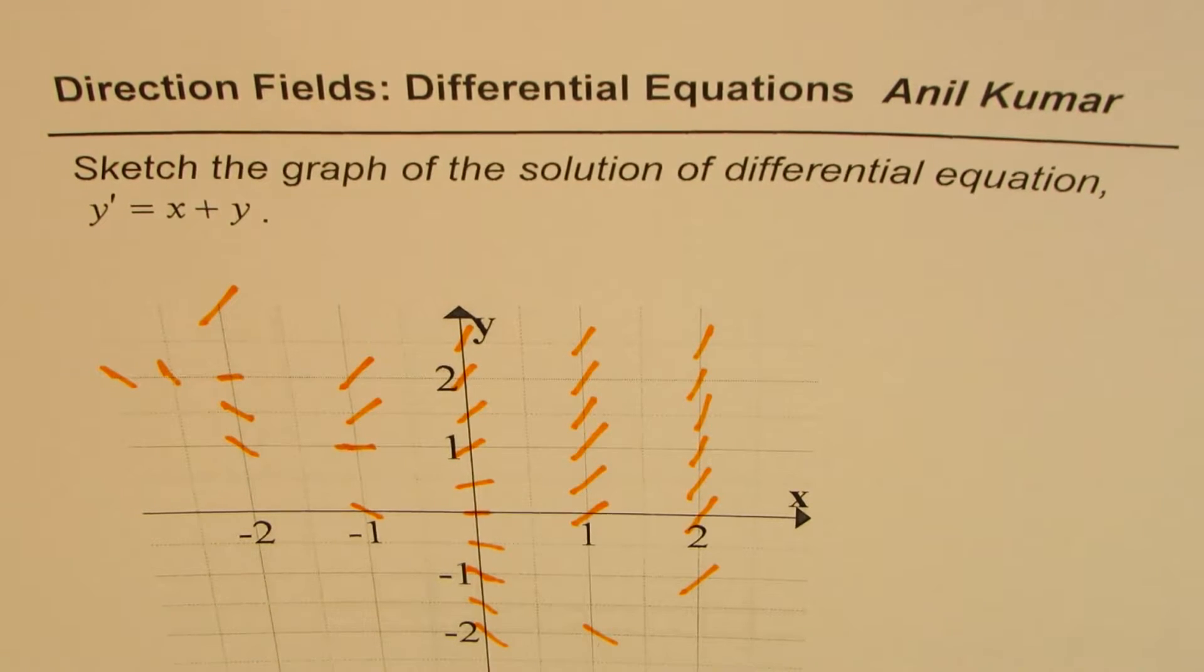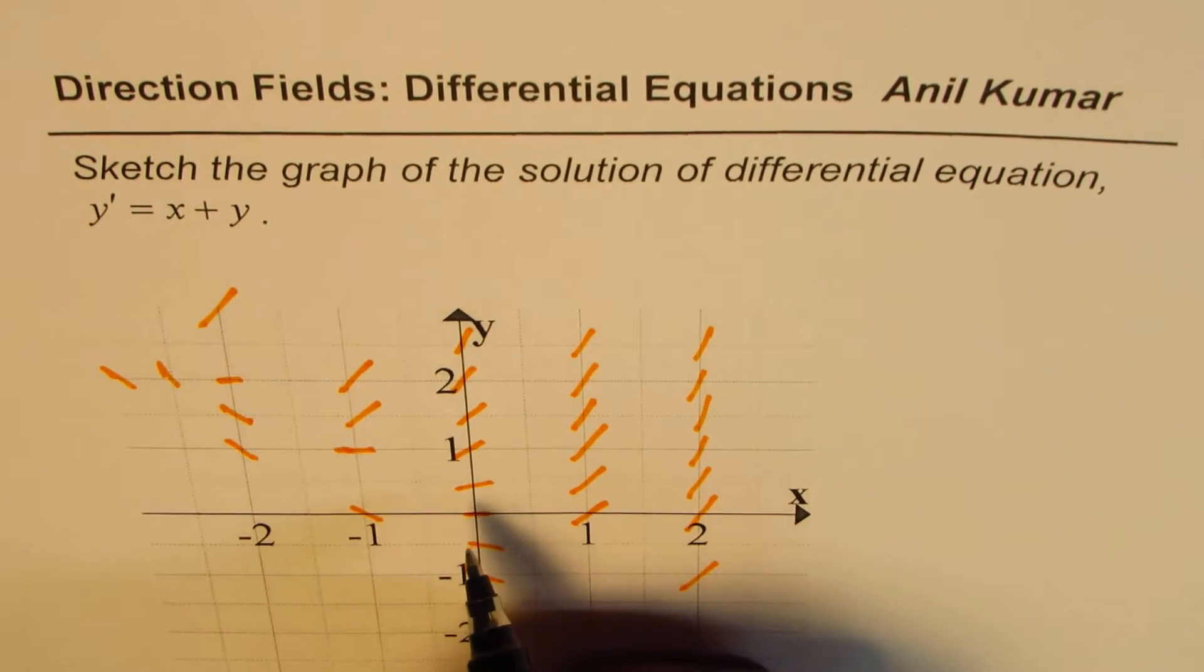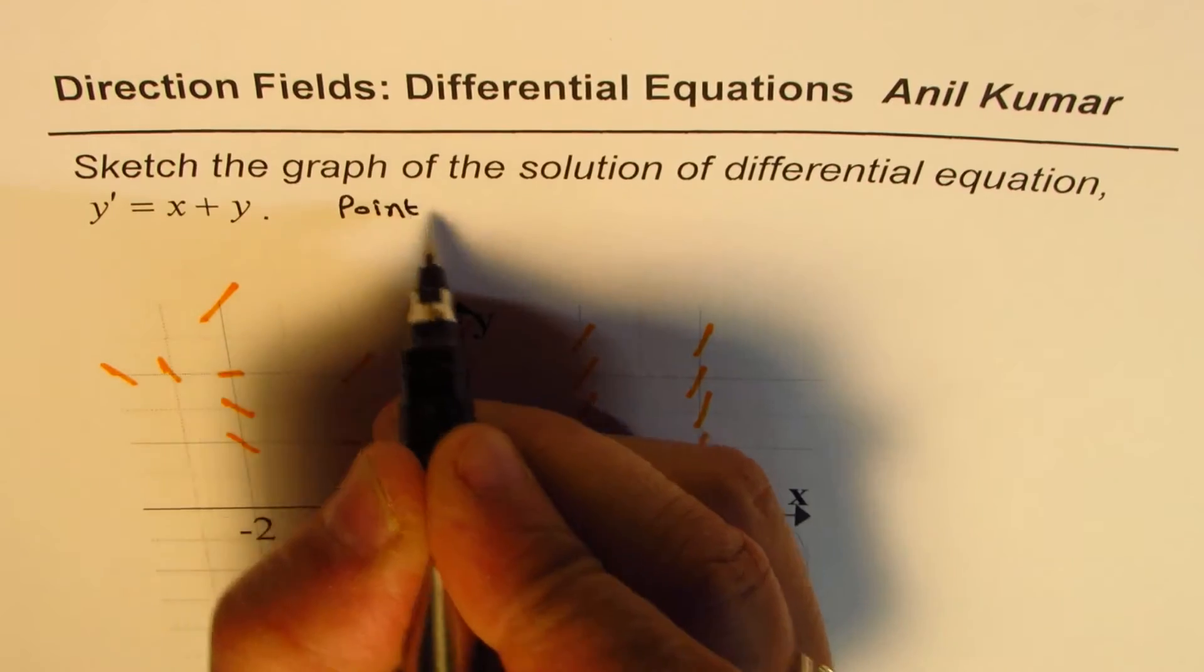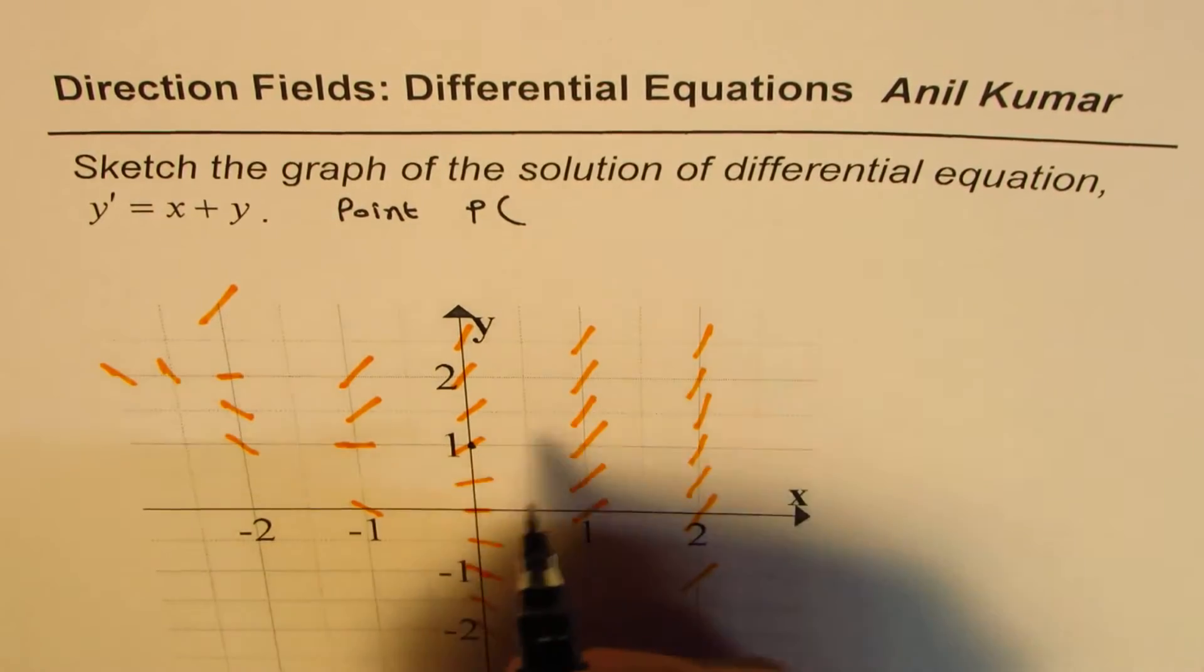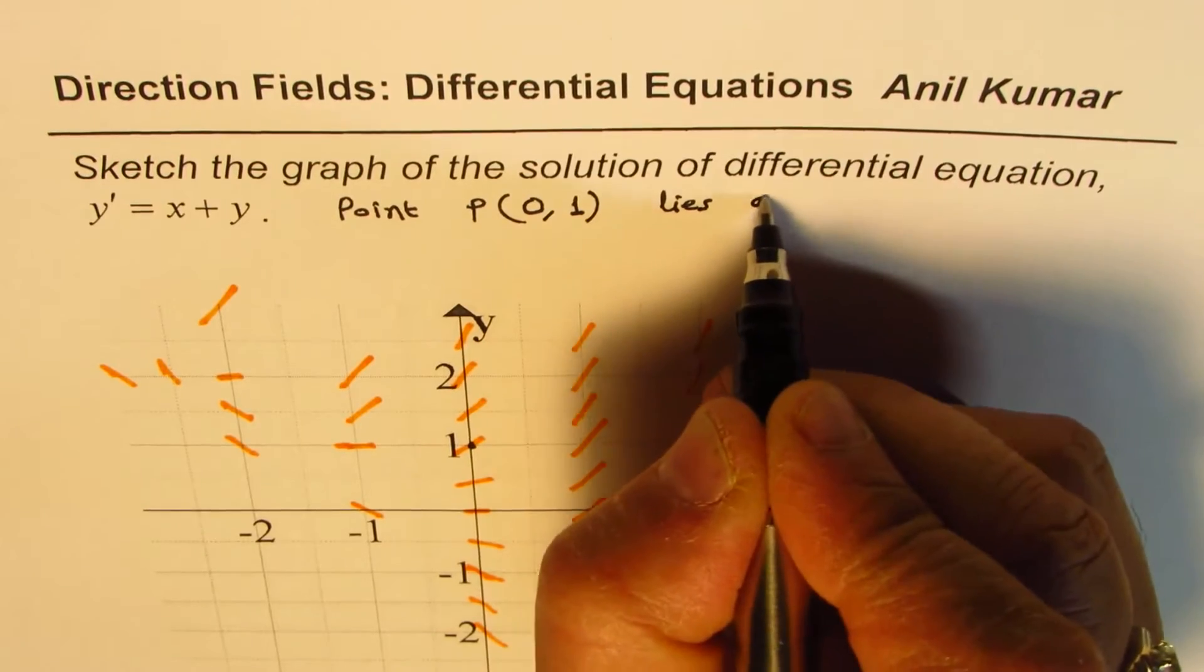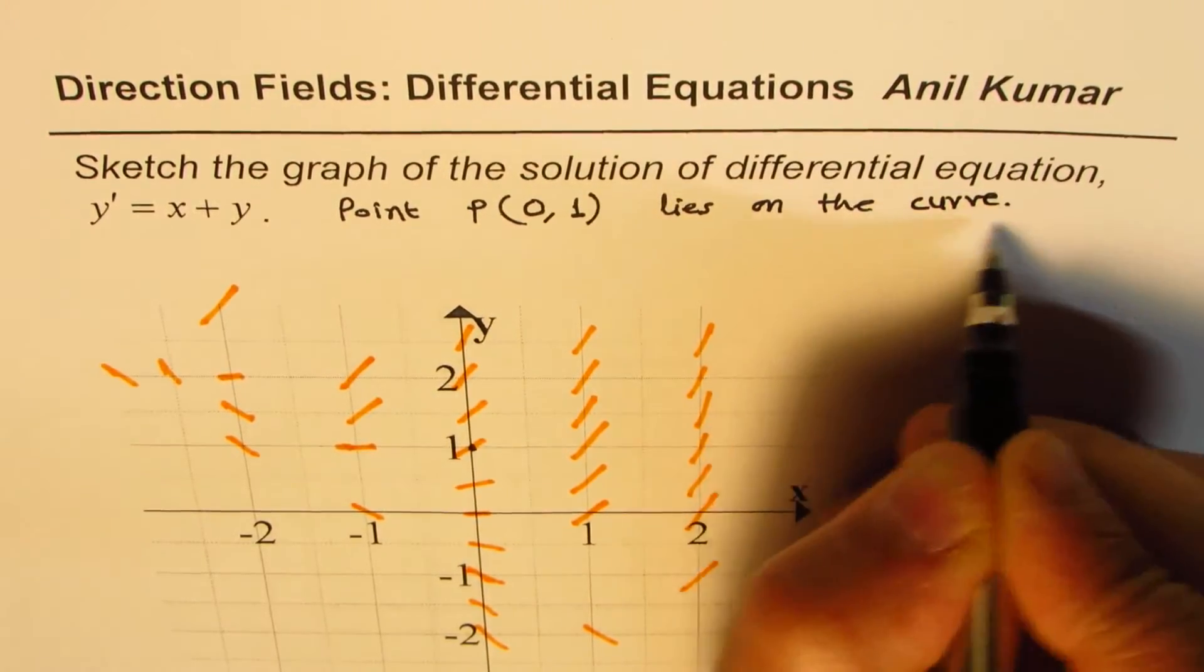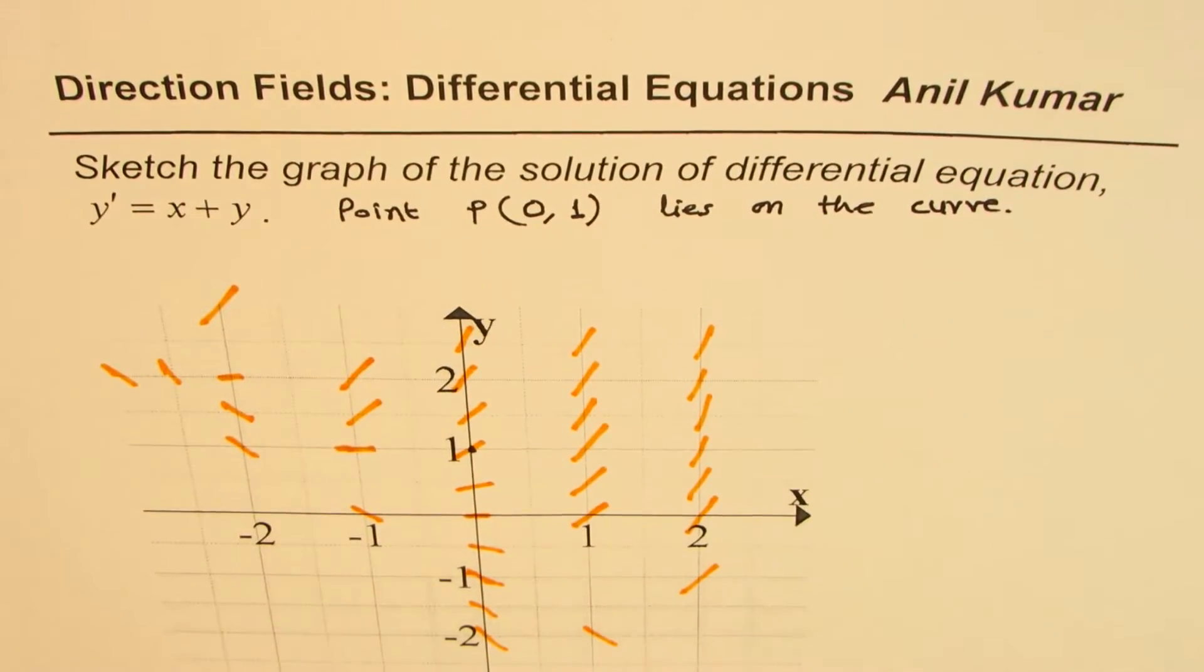Now, if I provide you with the point through which my curve goes through, then I can actually sketch the solution. So if I say point P, which is, let's take a point, let's say, let this be the point on the curve, which is 0, 1. Let's say the point P, which is 0, 1, lies on the curve. Now, curve means the solution of the curve, of this particular equation.